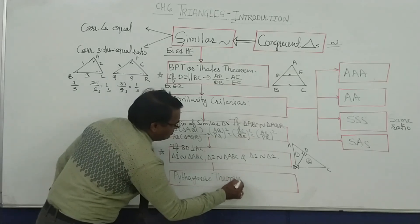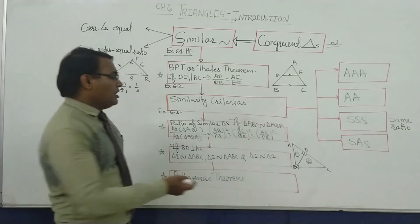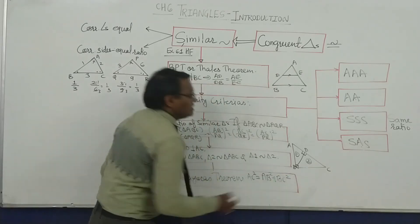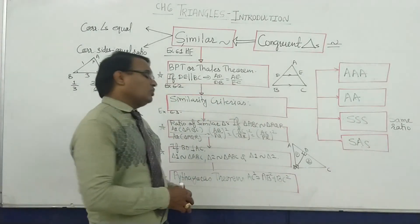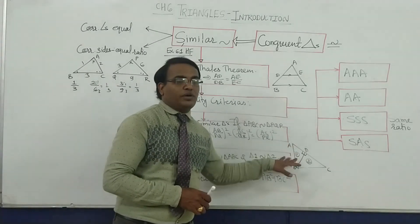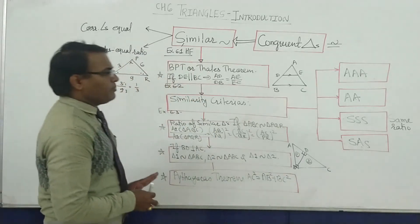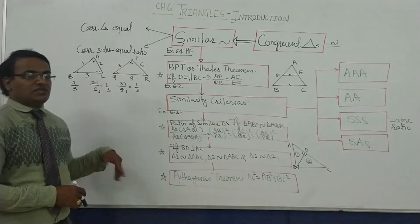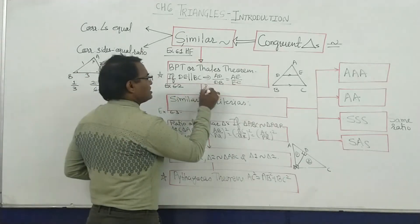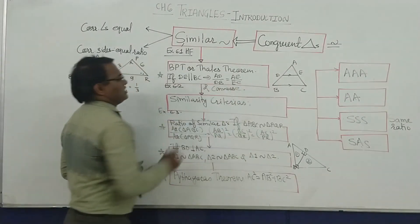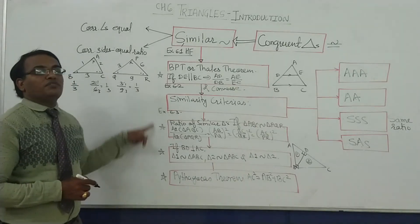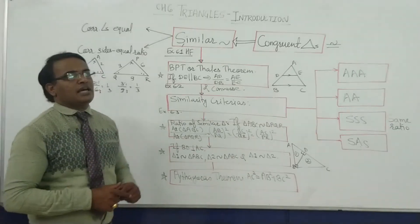One more important theorem is Pythagoras theorem: AC² = AB² + BC². According to Pythagoras theorem, the square of the hypotenuse is equal to the sum of the squares of the height and base. These are the important topics of chapter number 6. BPT, its converse, the area ratio result, and Pythagoras theorem — these are four points, and out of these four, one will surely appear in section B in your board exam paper.